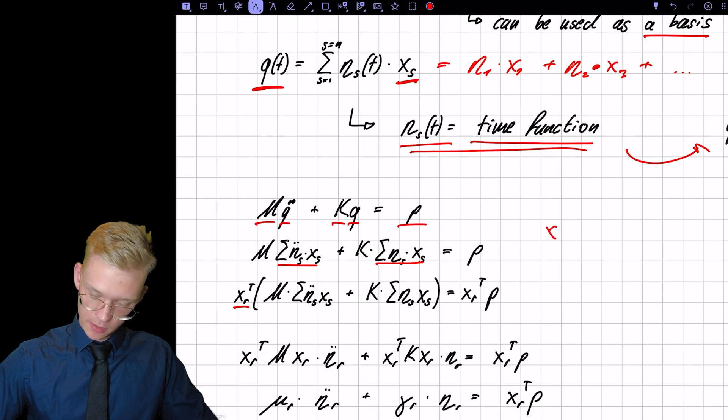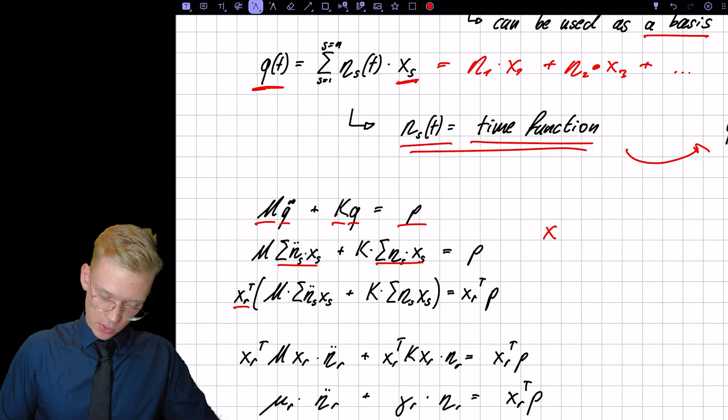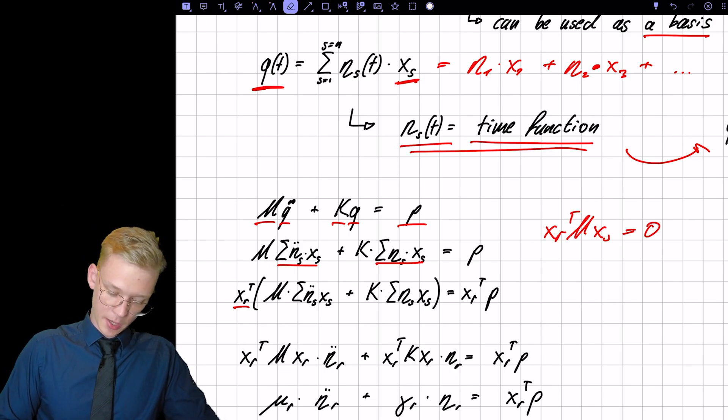So XR transpose M XS is zero. So if we pre-multiply, so project onto mode R, this sum will disappear. And it will disappear here as well because we have M and K orthogonality.